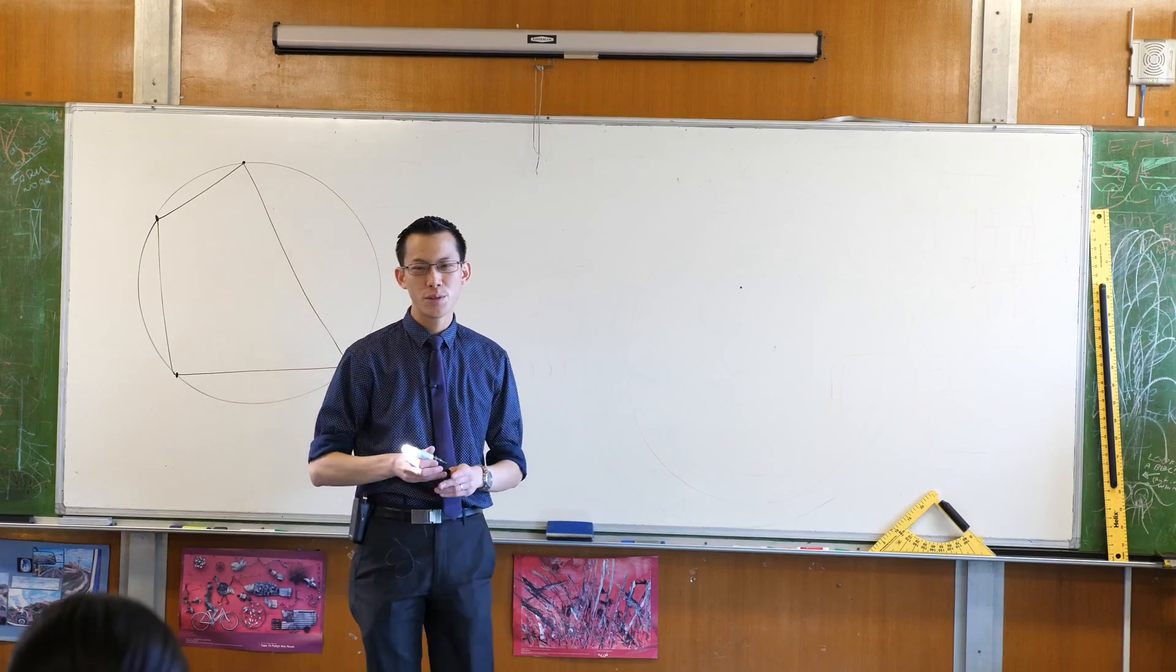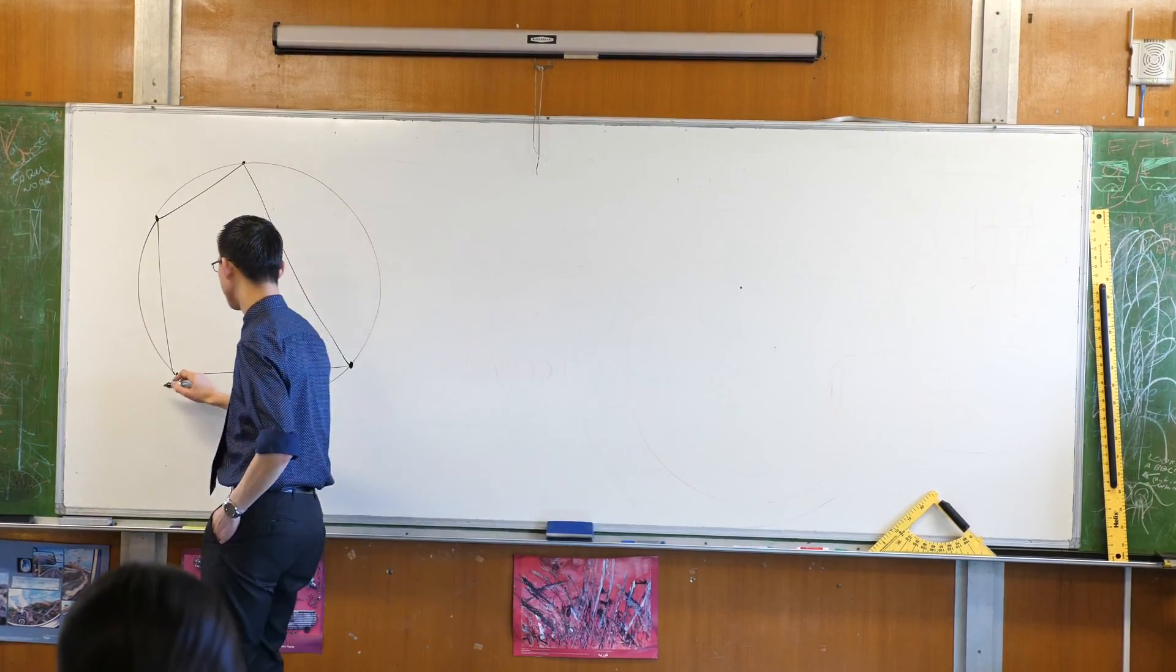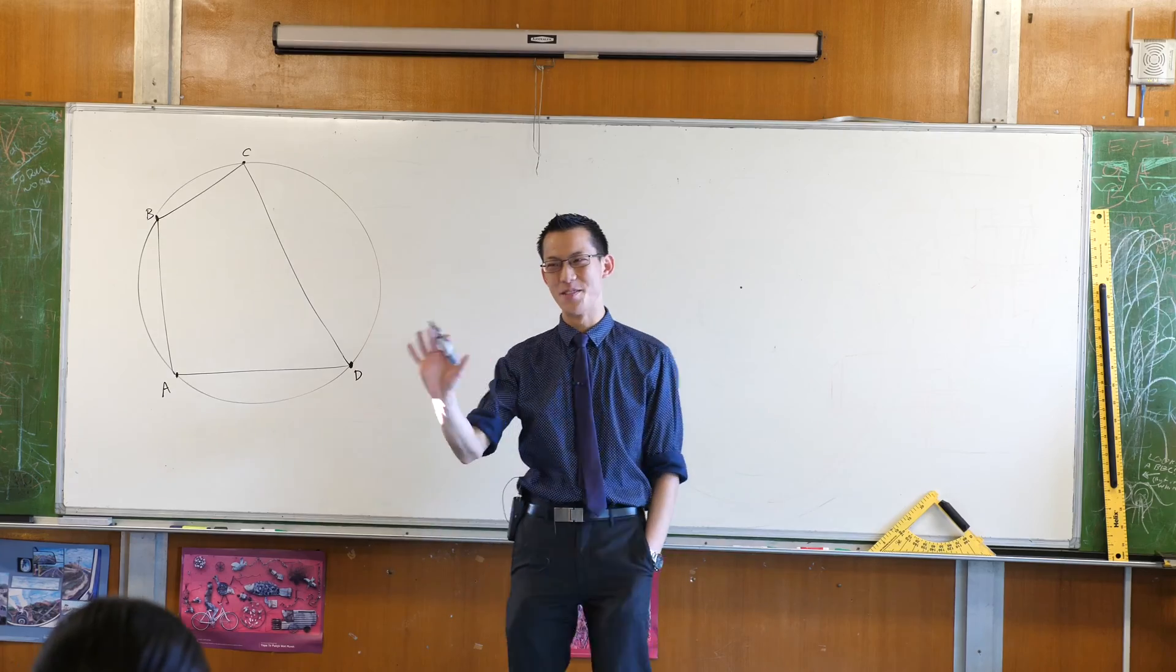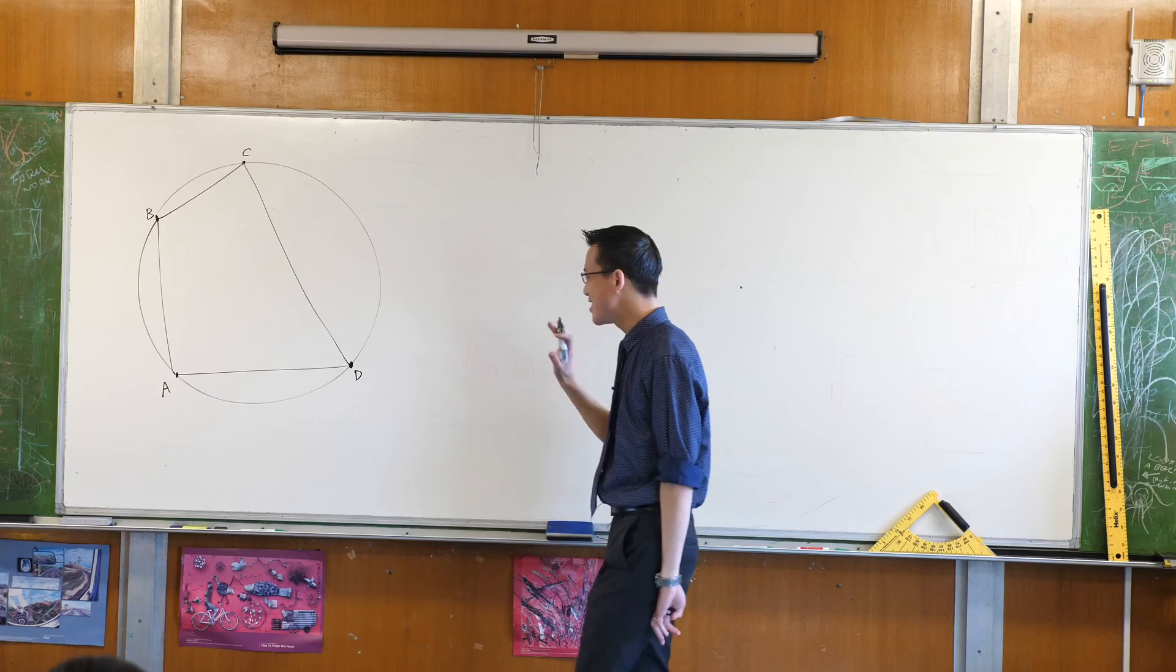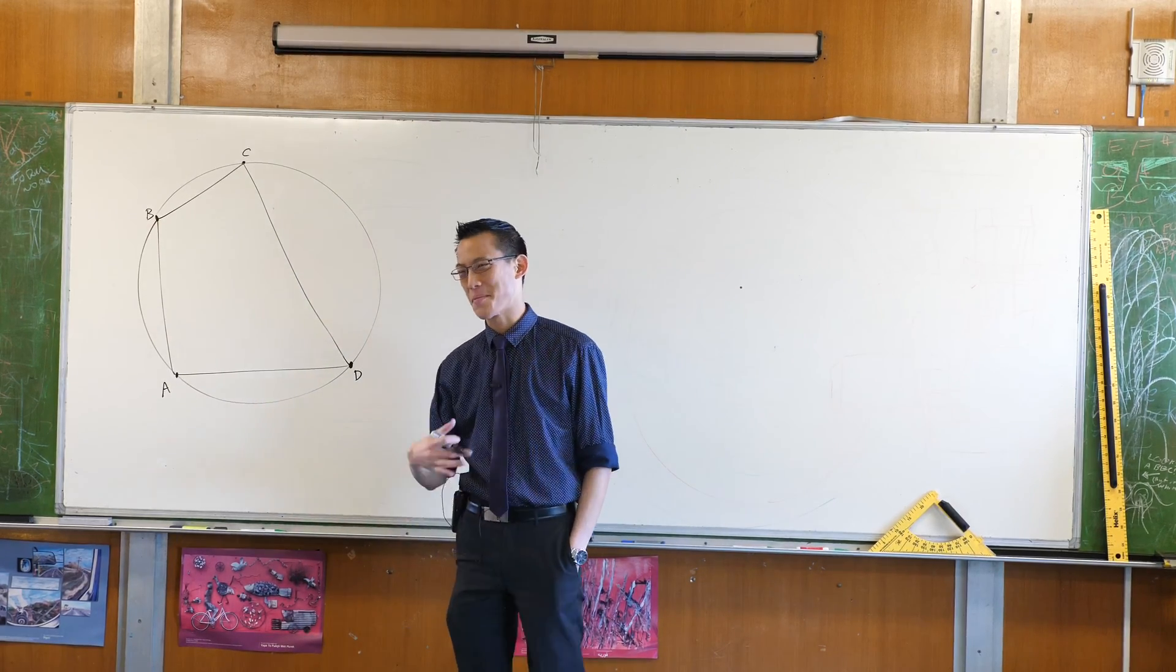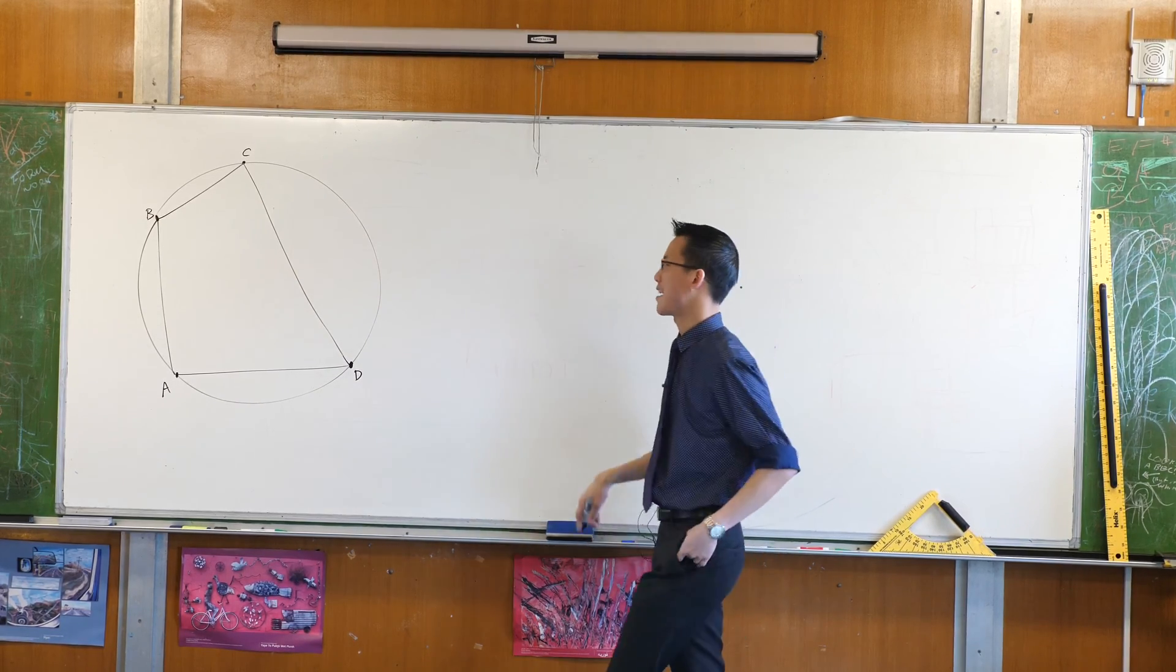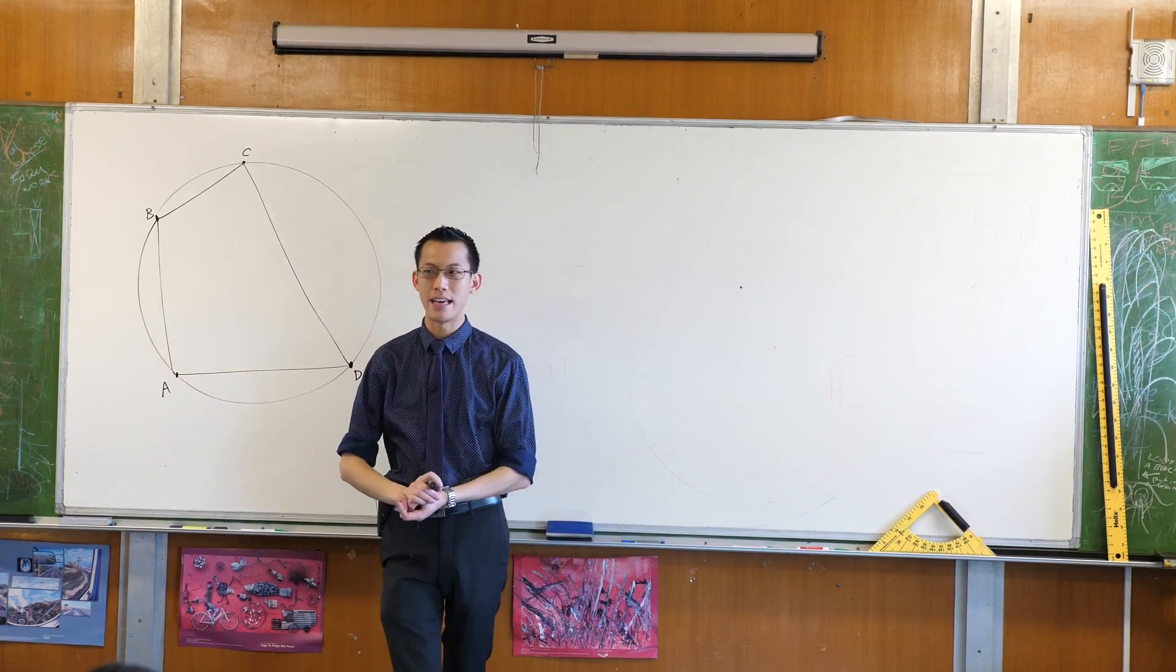All right, now as usual we'll name this fellow here, so let's call it ABCD. Okay, so this is a quadrilateral. Now, it's not a square, it's not a rectangle, it's not a parallelogram, at least I haven't intended it to be. It's any odd quadrilateral except for one fact, which is that you can see all of its vertices are on the circumference of a circle.